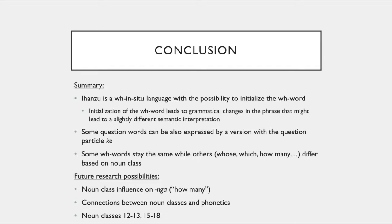In conclusion: Ihanzu uses WH in situ questions, with a possibility to fronalize the WH word. Fronting the WH word leads to grammatical changes that might result in a slightly different semantic interpretation. Some words can also be expressed by a version with the question particle 'ke'. Some WH words stay the same, but others — like 'whose', 'which', and 'how many' — differ based on noun class. Topics for future research include: noun class influence on 'nga' (how many), the connection between noun classes and phonetics, and the remaining classes 12–13 and 15–18. Thank you for your attention.